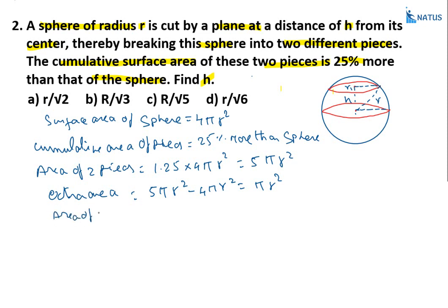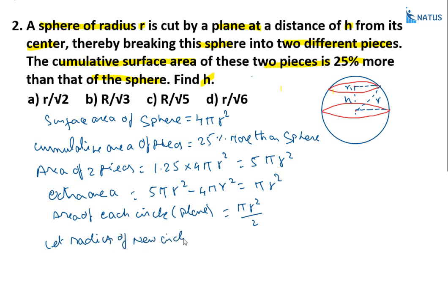The area of each new circular face equals πr²/2. Since the new circle has radius r1, its area is πr1². Setting πr1² = πr²/2, pi cancels, giving r1² = r²/2, so r1 = r/√2.